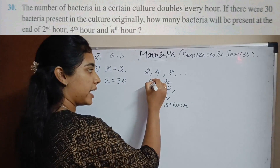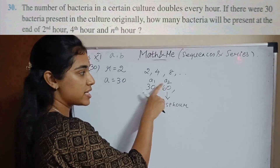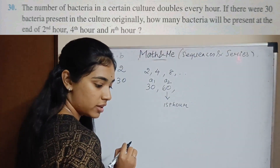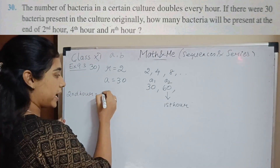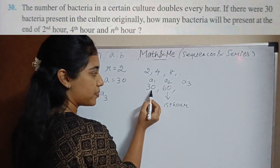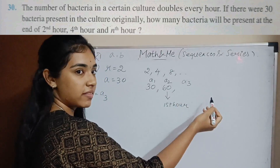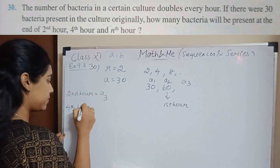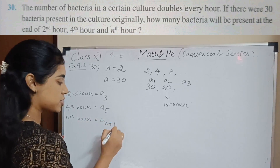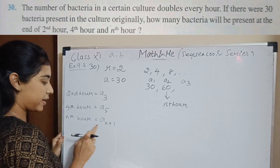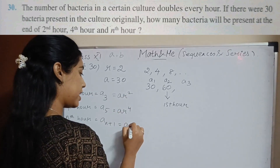At a1 we have the original count, a2 is after the first hour, and a3 is at the end of the second hour. So at the end of the second hour, it is a3, not a2. Similarly, at the end of the fourth hour it is a5, and at the end of the nth hour it is a(n+1). The formula follows: a·r^2, a·r^4, and a·r^n.